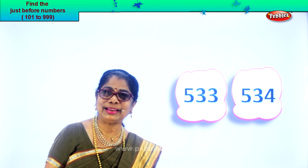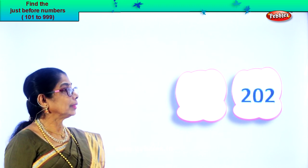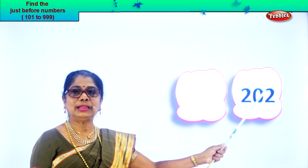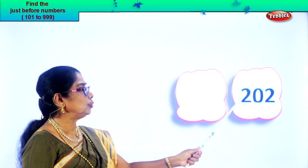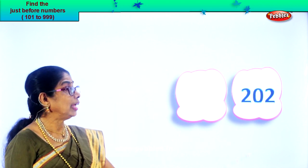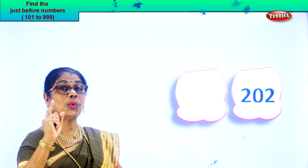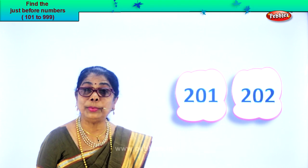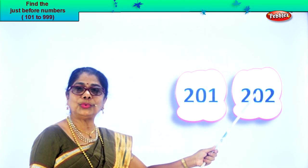Did you enjoy? Let's look at another number. Here you have two in the ones place, zero in the tens place, and two in the hundreds place. Read the number: two hundred and two. Take the ones place — two. One less than two is one. So two hundred and one. That could be the number before. Two hundred and one, two hundred and two.